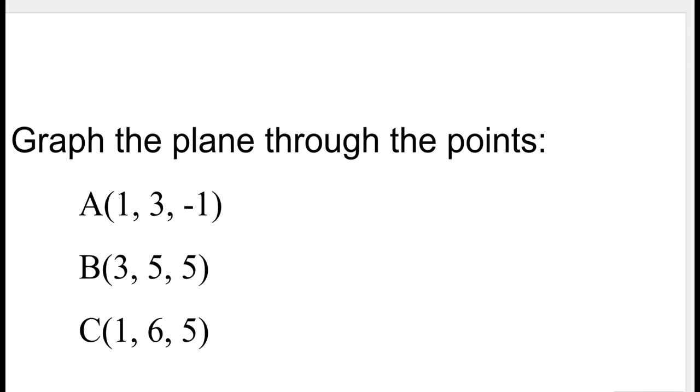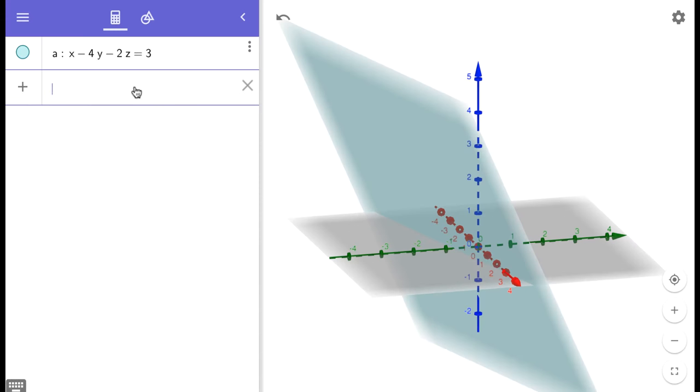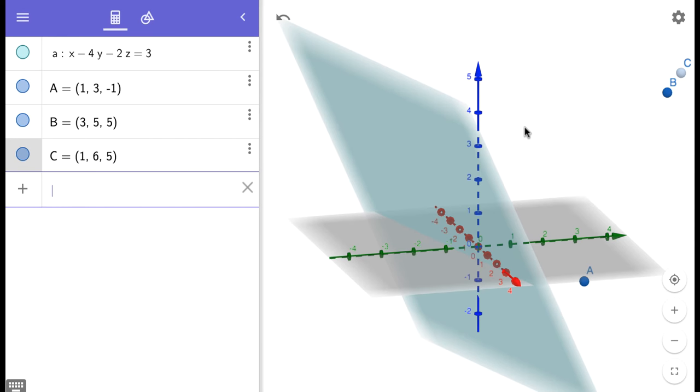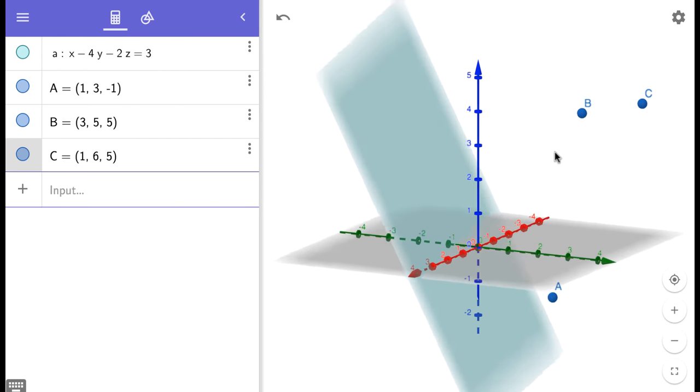So next we're going to graph a plane through 3 points. So we enter our points in first and because we're entering points, we use capital letters. So you can see our 3 points there.